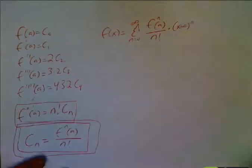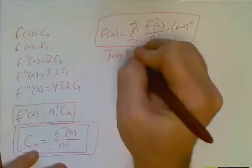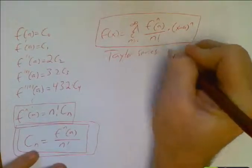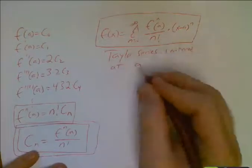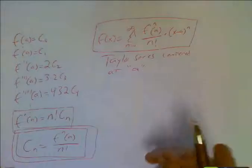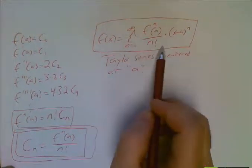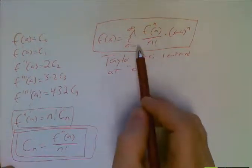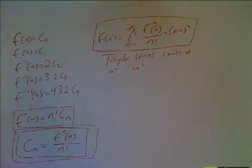And this is what we call a Taylor series centered at a. Remember when we talked about a power series centered at a. This is a power series. But when you write it in this form where the constant term is written with this formula, we call it a Taylor series. And in a more special case of this,